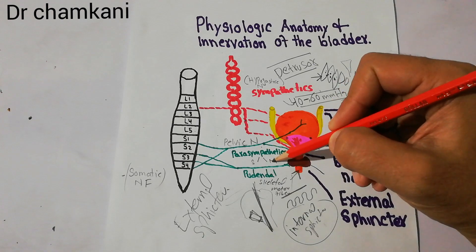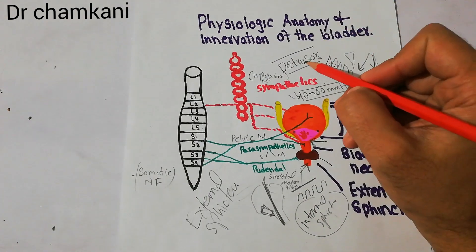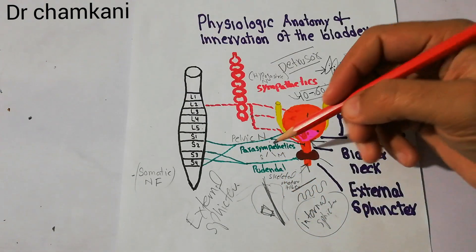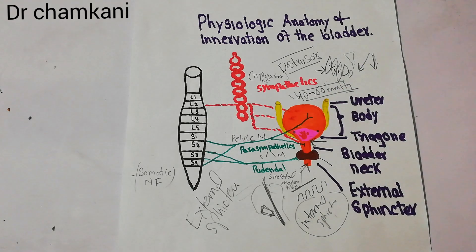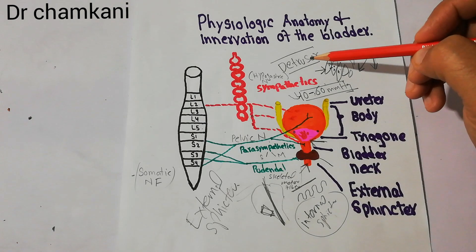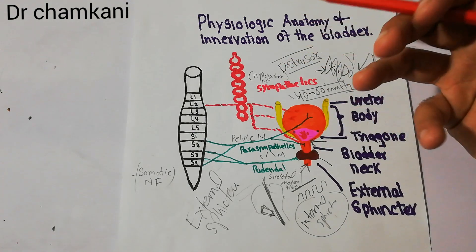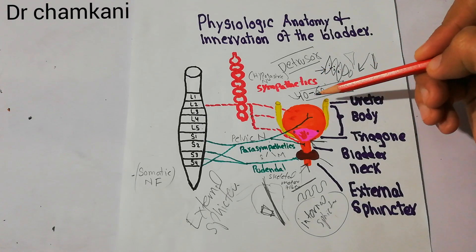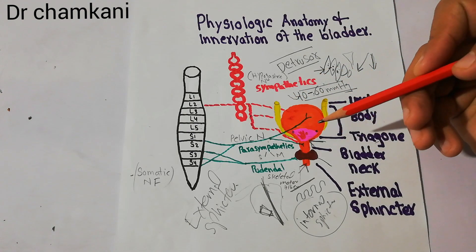On the other hand, the motor fibers — which are basically parasympathetic fibers coming in the pelvic nerve — supply the detrusor muscle. These parasympathetic fibers come to the preganglionic region in the urinary bladder, and then the postganglionic fibers innervate the detrusor muscle. The detrusor muscle is able to contract due to this motor supply, and due to contraction of the detrusor muscle — which is the main smooth muscle mass of the urinary bladder — a pressure of up to 40 to 60 millimeters of mercury can be generated, which is sufficient to push urine out of the bladder.